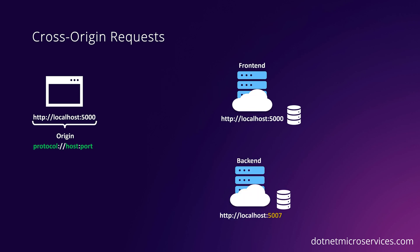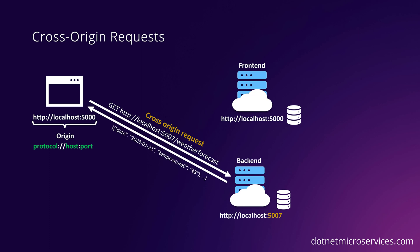Now let's move our backend to a different web server with a different address. When the weather page needs to get rendered in the frontend, the browser makes a GET request to the backend at HTTP localhost 5007 — a different origin. Since the port of the backend is different than the one in the browser, this is known as a cross-origin request. The backend will return the weather data just as before, but the browser knows that this response comes from a different origin since it had set the origin header in the request. Therefore, it rejects the response data with a CORS error.